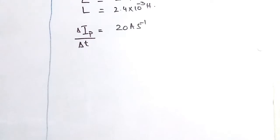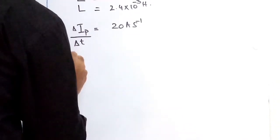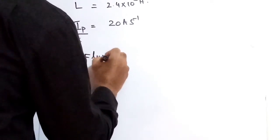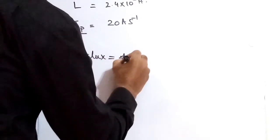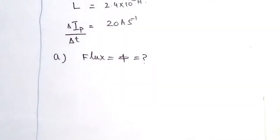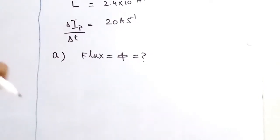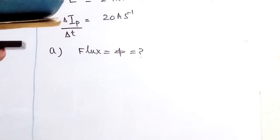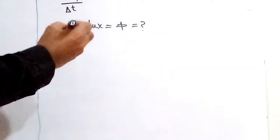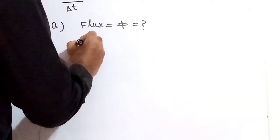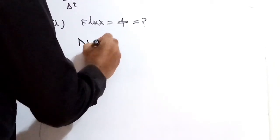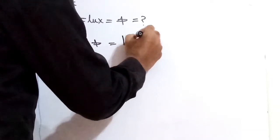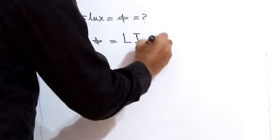Now in the first part, or part a, we have to find the flux. To find the flux, we have the formula: N phi equals self-inductance L times current Is. Now we have L, we have I, and we have to find phi.